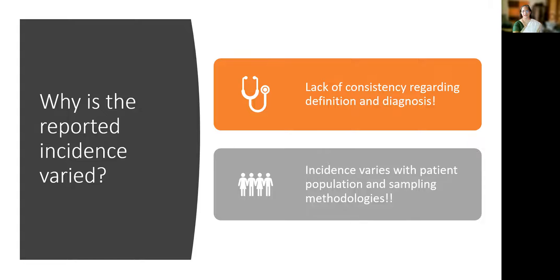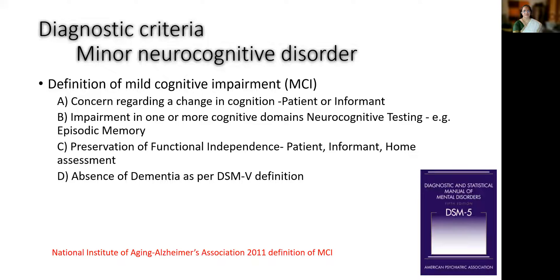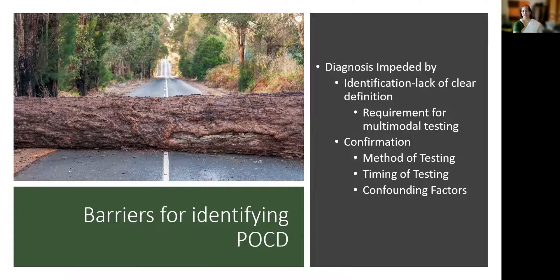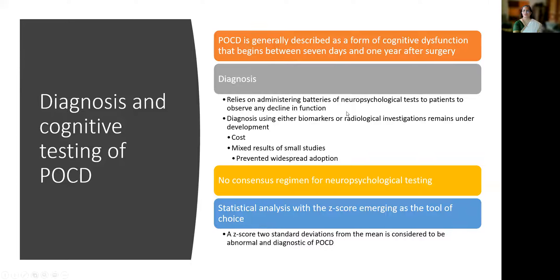Another cause for variation in incidence is a lack of awareness or monitoring for POCD. The first issue is the definition, which is a very gray area. Minimal cognitive impairment is defined as impairment in cognition with functional independence preserved, whereas major cognitive disorder involves cognitive change that interferes with daily independence activities. Most of these definitions are not black and white — there are many gray areas, creating a barrier for identifying postoperative cognitive dysfunction. Additionally, it requires multimodal testing to identify and confirm a diagnosis of POCD, and several tests have been described but there is no consensus on which is best.